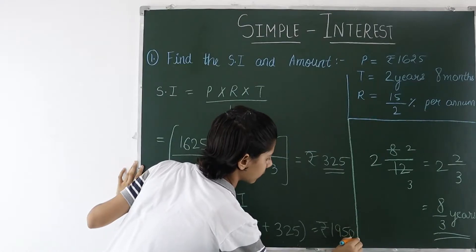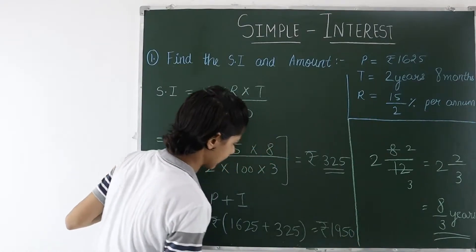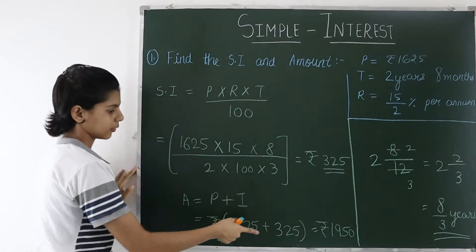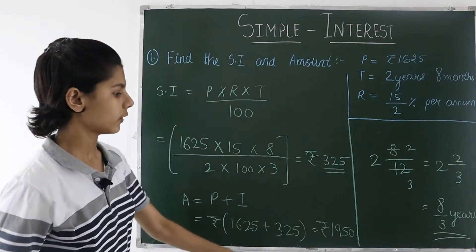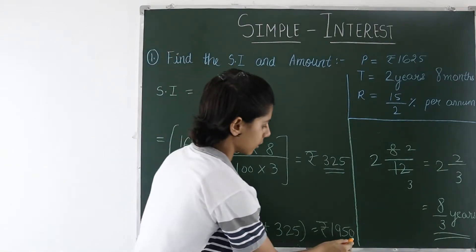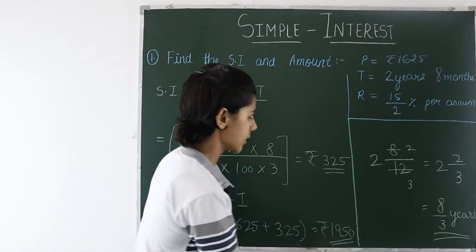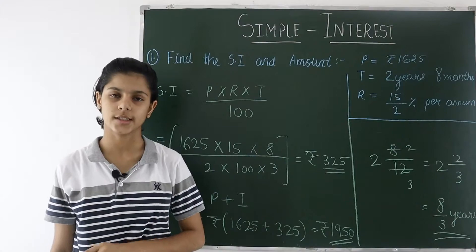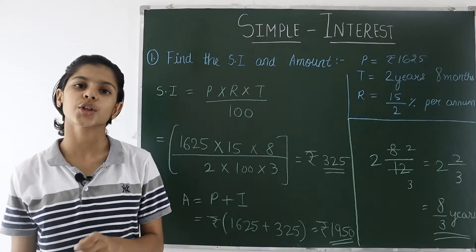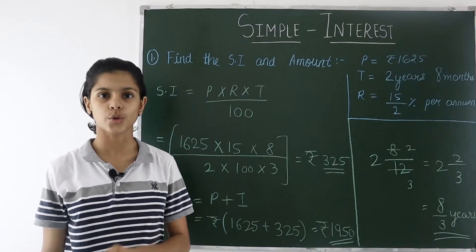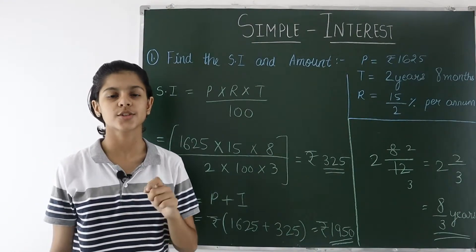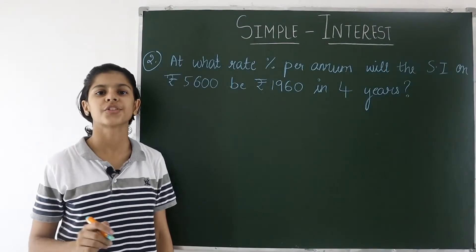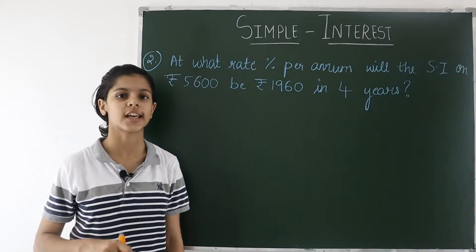Adding Principal 1625 and Simple Interest 325 gives Amount = ₹1950. So the simple interest is ₹325 and the amount is ₹1950. Like this you can solve any question — you just need to remember the formula.